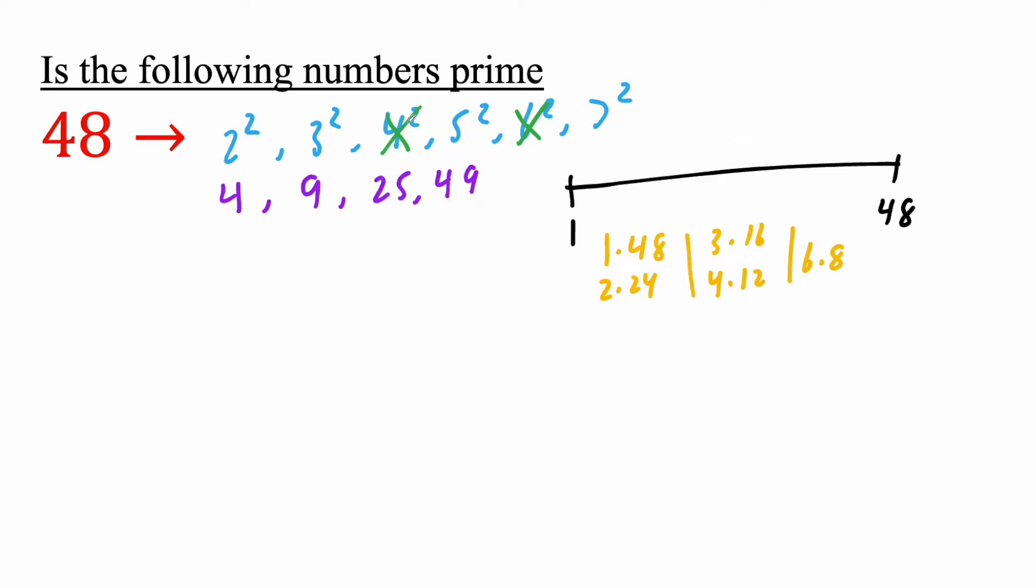Now, the reason why 4 squared is not important is if a number can be divided by 4, it can also be divided by 2. Because 2 is your prime number and 4 is your composite number. Likewise, there's no need for 6 because in order to get 6, it's 2 and 3. So at this point, why this method is so useful is that we're able to narrow down our testing points.